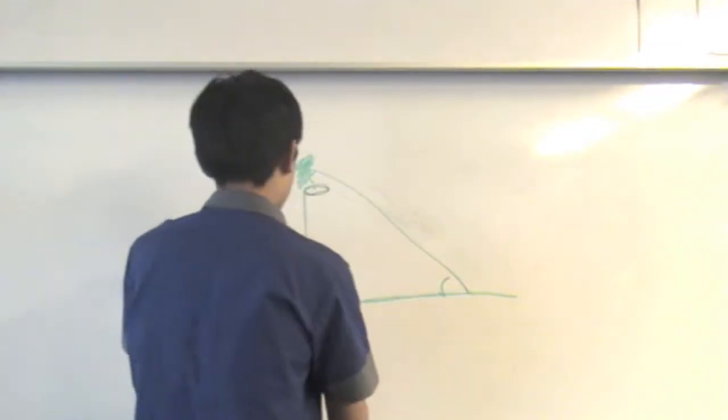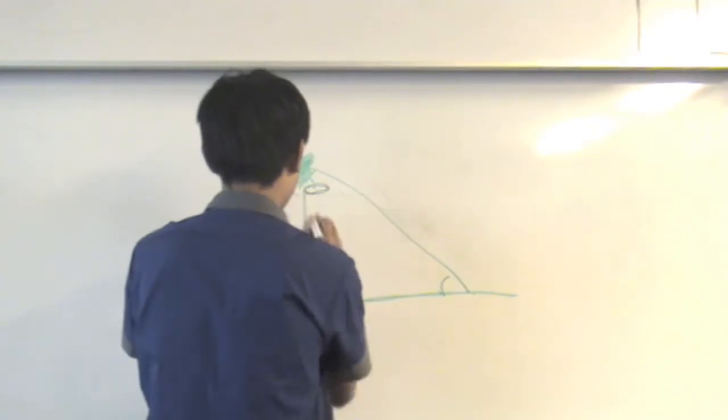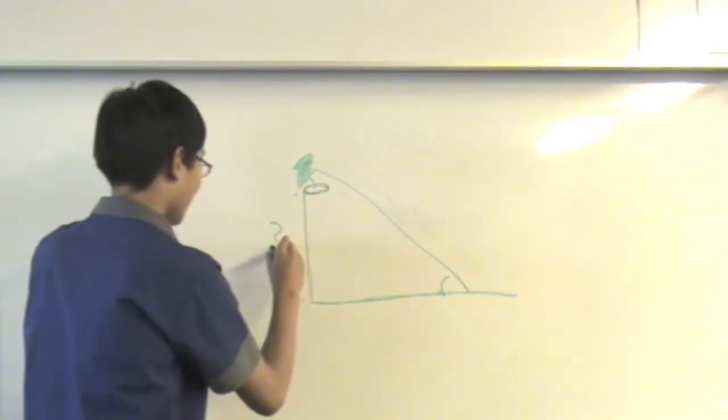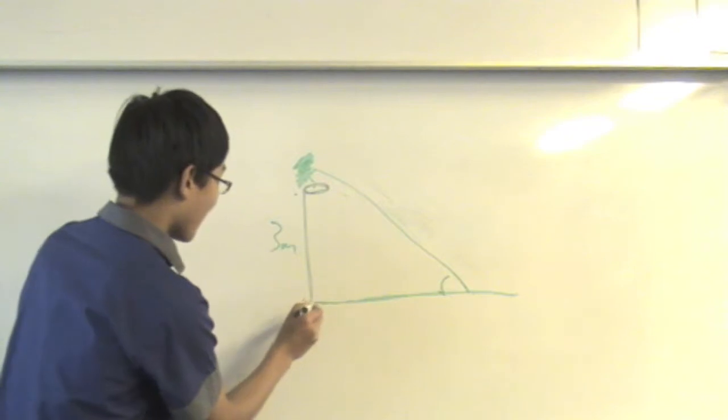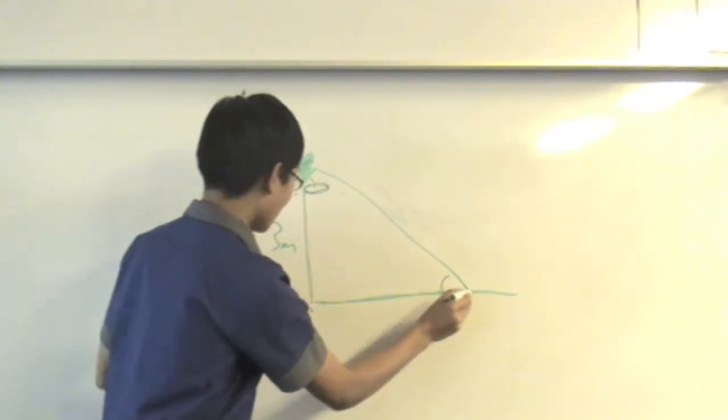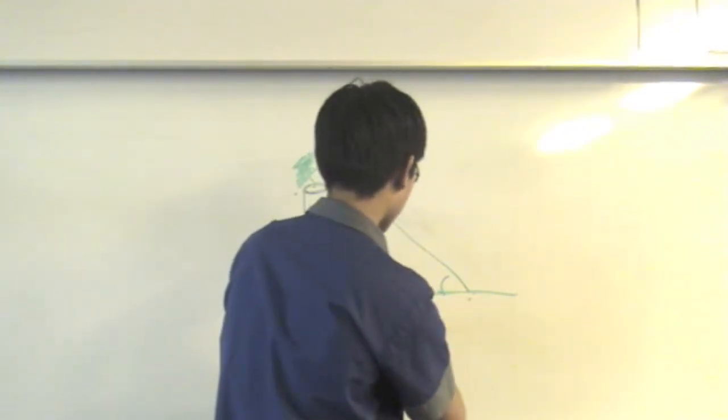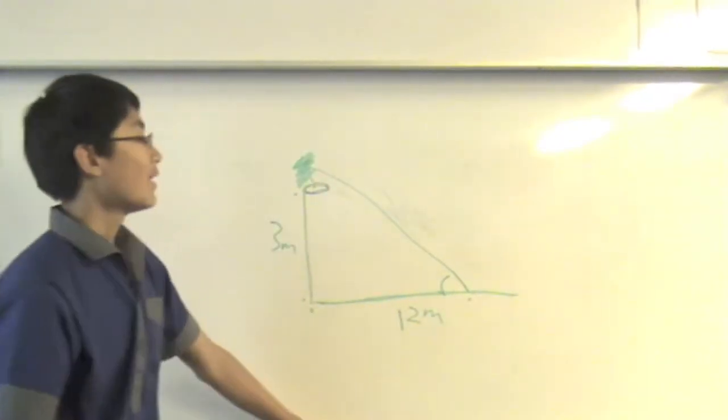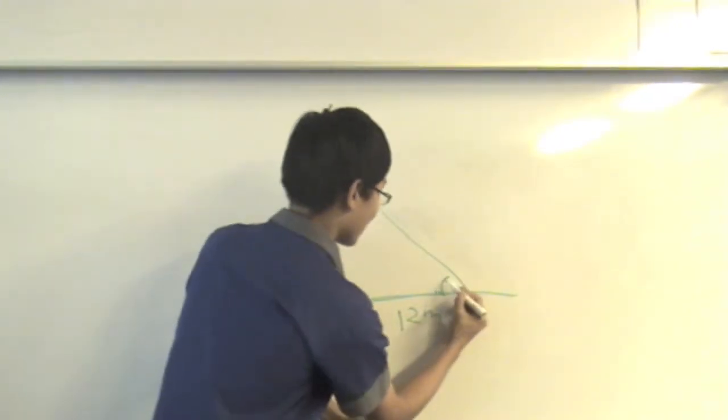So, assuming that from here to here the height is 3 meters and from the base of the hoop to the person is 12 meters, then we can figure out the angle by doing some trig.